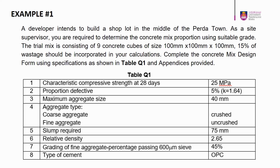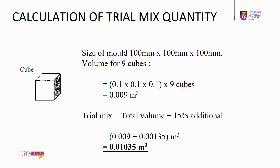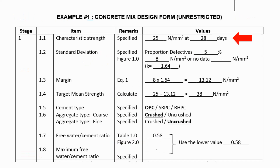Please do this exercise together with the mix design appendix and form. First, we need to calculate the trial mix volume. Volume for nine concrete cubes is 0.009 m³. Total volume of concrete with 15% wastage is 0.01035 m³.